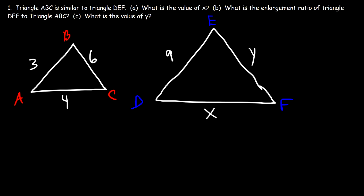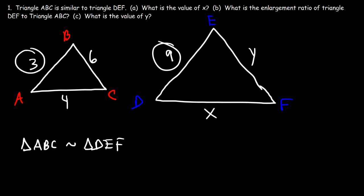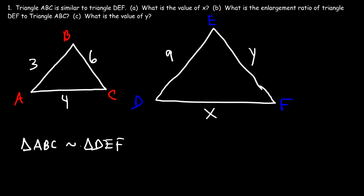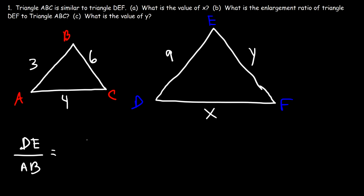Let's start with a problem: triangle ABC is similar to triangle DEF. What is the value of x? Since they're similar, the ratio of corresponding sides are equal. We can write: DE over AB equals EF over BC, and that equals DF over AC.